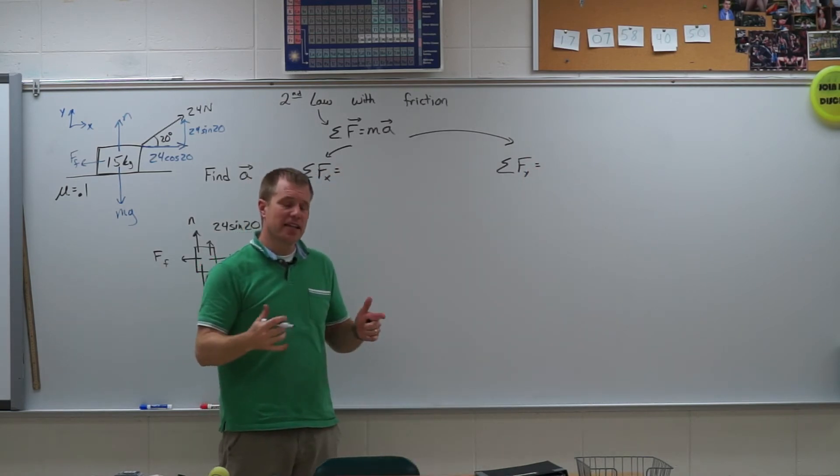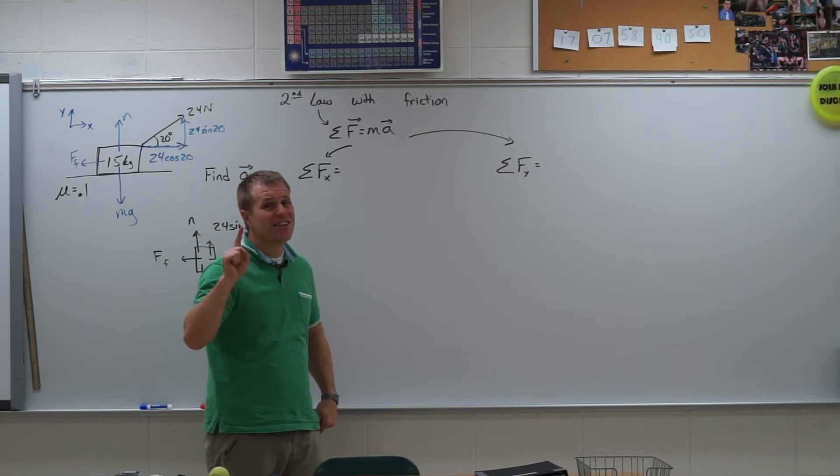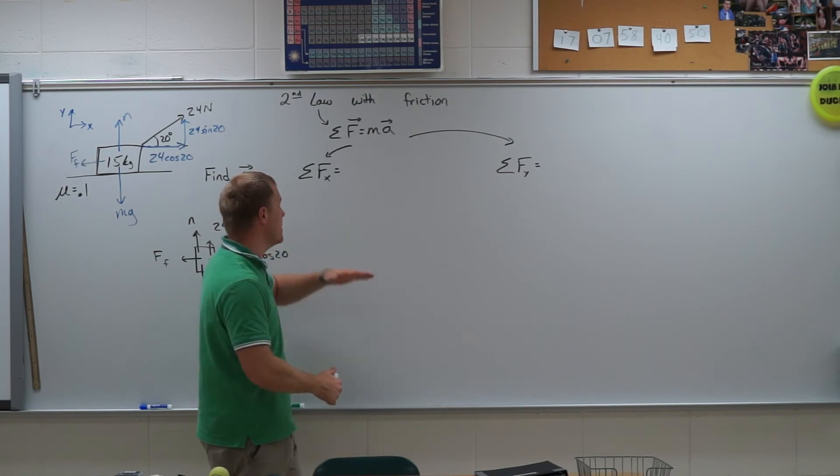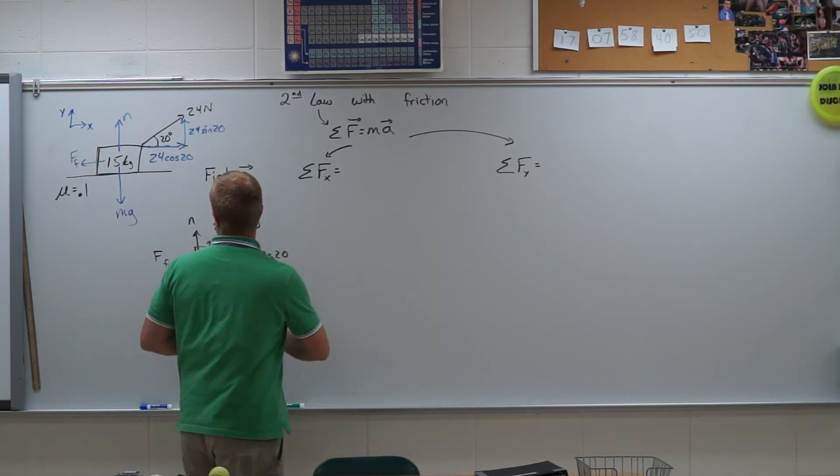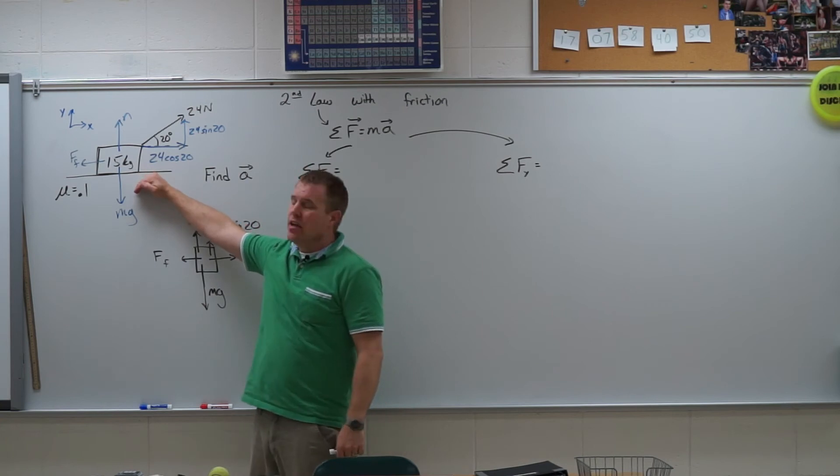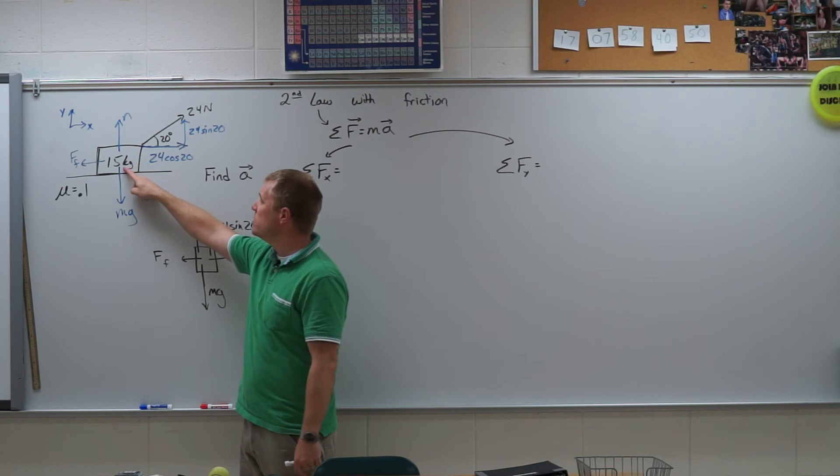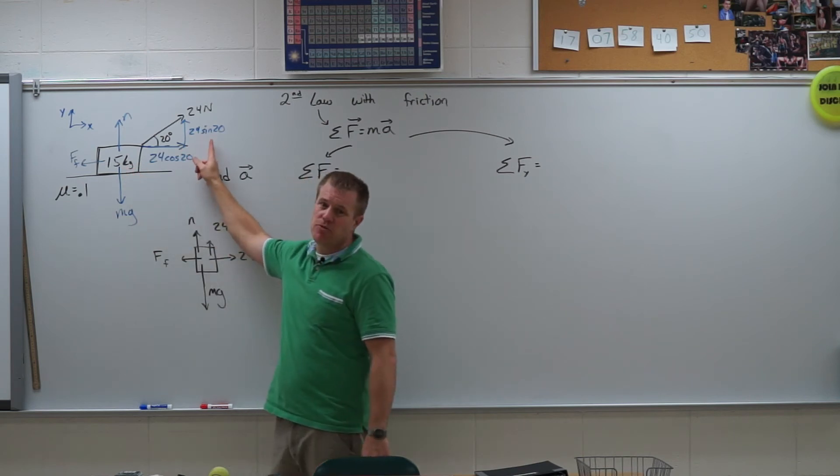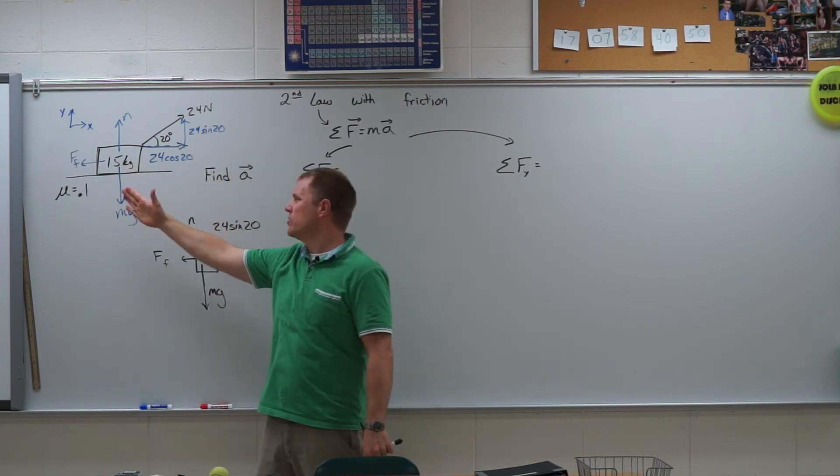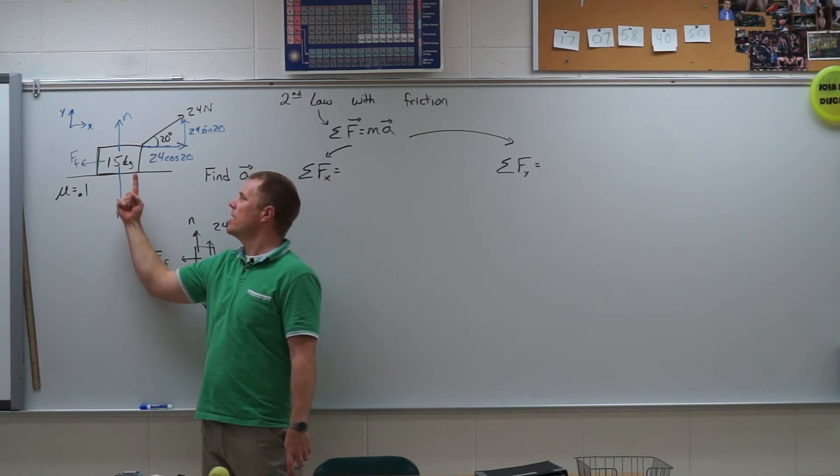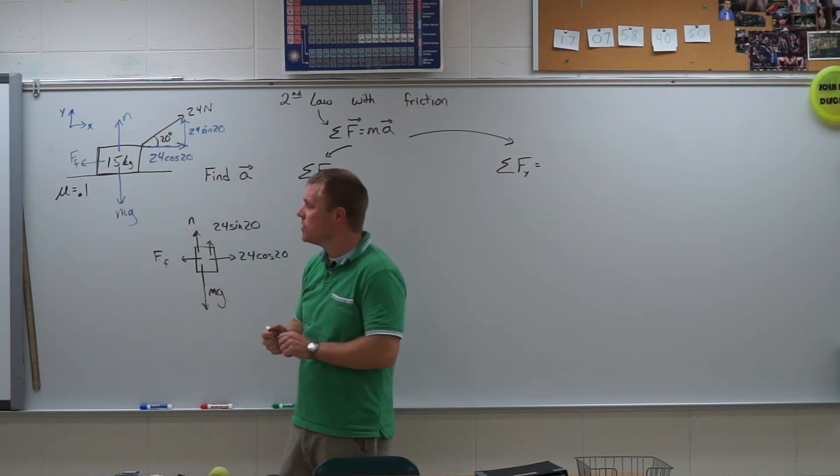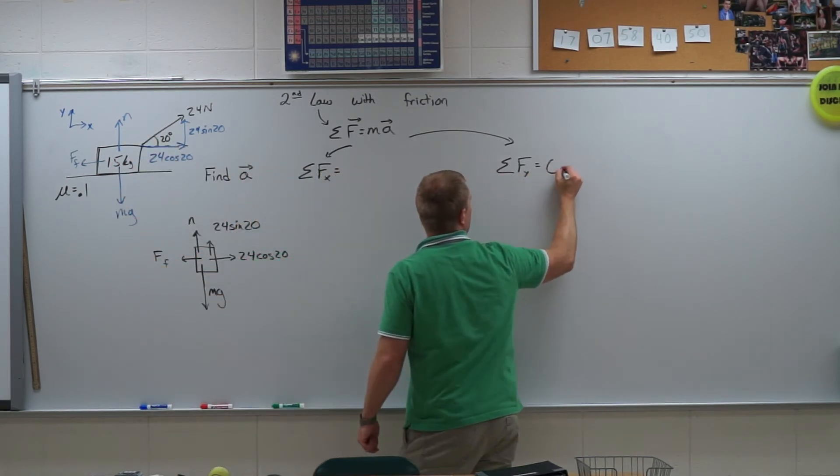And I have to decide where is that acceleration going to be. Ideally I want it in just one direction. I only want it in the x or only in the y. And so if I look at my problem here it's pretty safe to say that with 15 kilograms, roughly 150 newtons in weight, a 24 newton force isn't going to lift it off the table. So it's going to not be accelerating off or into my surface. So the acceleration in the y direction is going to be zero.